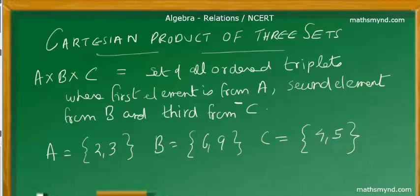The important point is that we get ordered triplets in such a manner that the first element is from A, second from B, and the third element from set C. To make the point clear, let's look at the example.